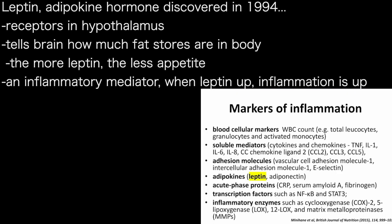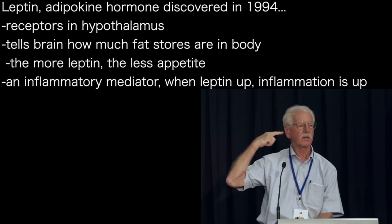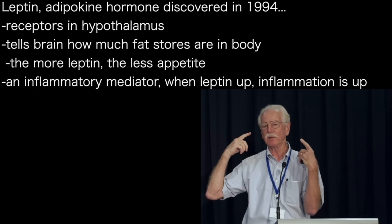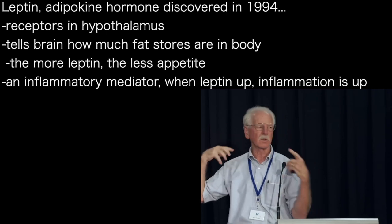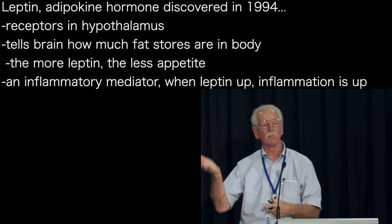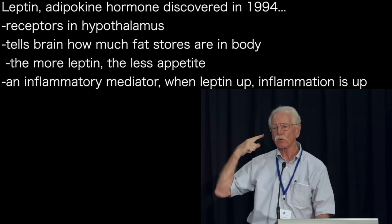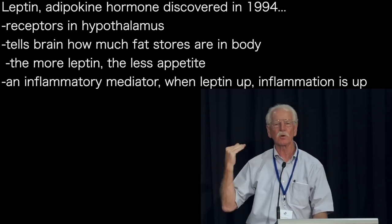One of the interesting things highlighted here is leptin. Leptin is a hormone that was discovered in 1994. It is an adipokine hormone made in adipose tissue. It circulates through the blood and has specific receptors in the hypothalamus. The simplistic concept is that it tells the hypothalamus how much fat is stored in the body — the more fat stores you have, the more leptin you make, theoretically. That sends a stronger signal to the brain, which reduces appetite. So it's a satiety hormone.